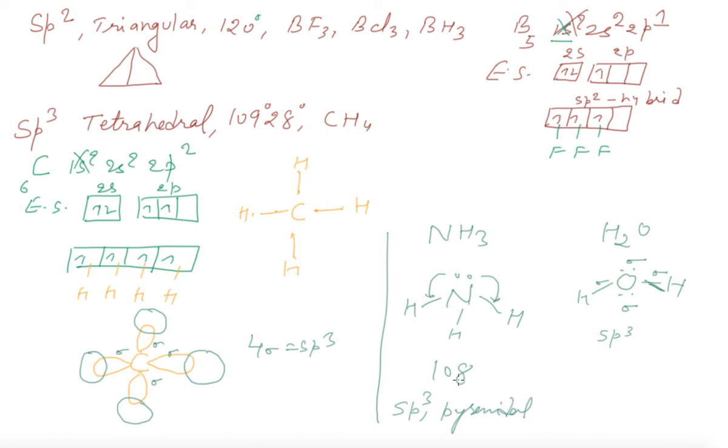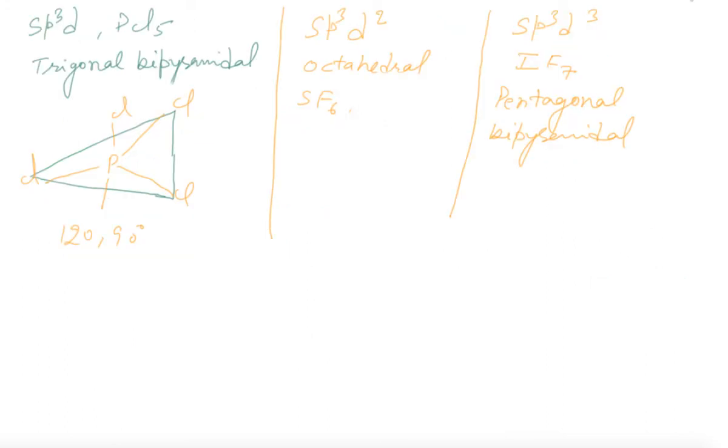One more thing - nitrogen has no vacant d orbital, it cannot accept electrons, so it is pyramidal and also a base.